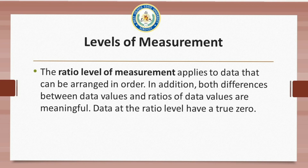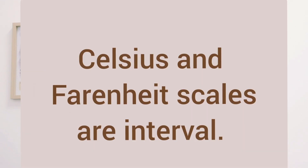An example of a ratio variable is height. If your height is zero centimeters, it means you do not have height at all. Similarly, if your weight is zero, you have no weight. But if your temperature is zero degrees Celsius, it does not mean that you have no temperature — we even have negative degrees Celsius. So zero degrees Celsius does not signify the absence of temperature, which is why temperature in degrees Celsius is an example of the interval level of measurement.